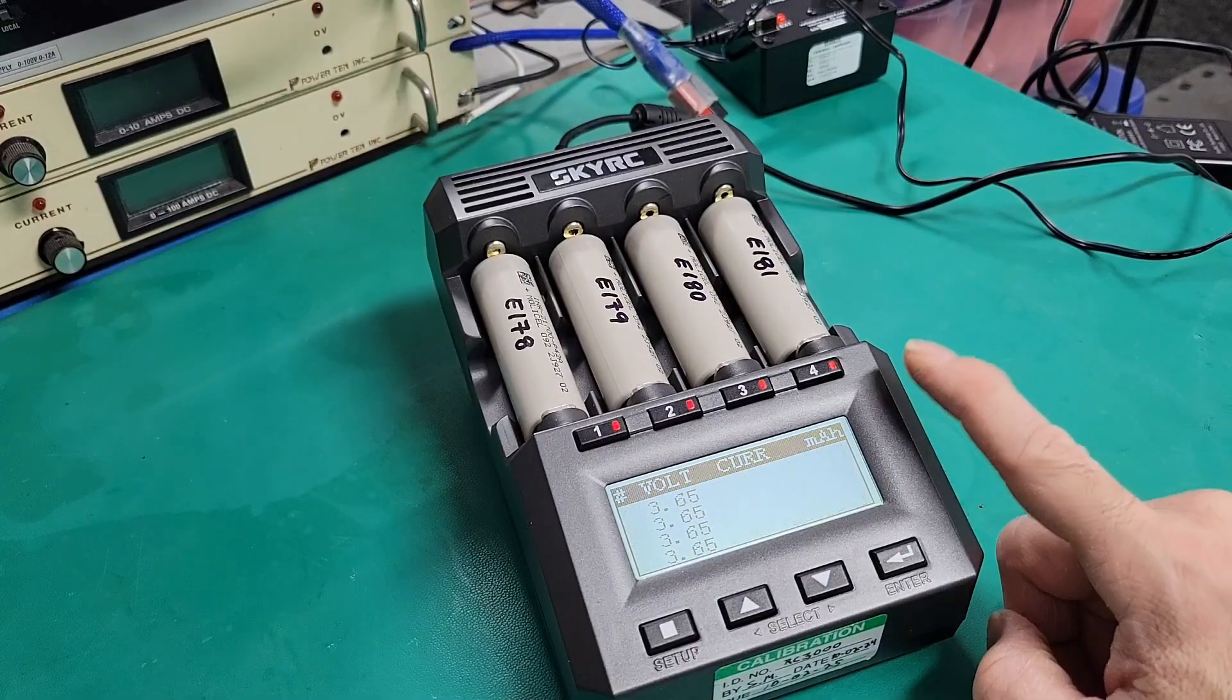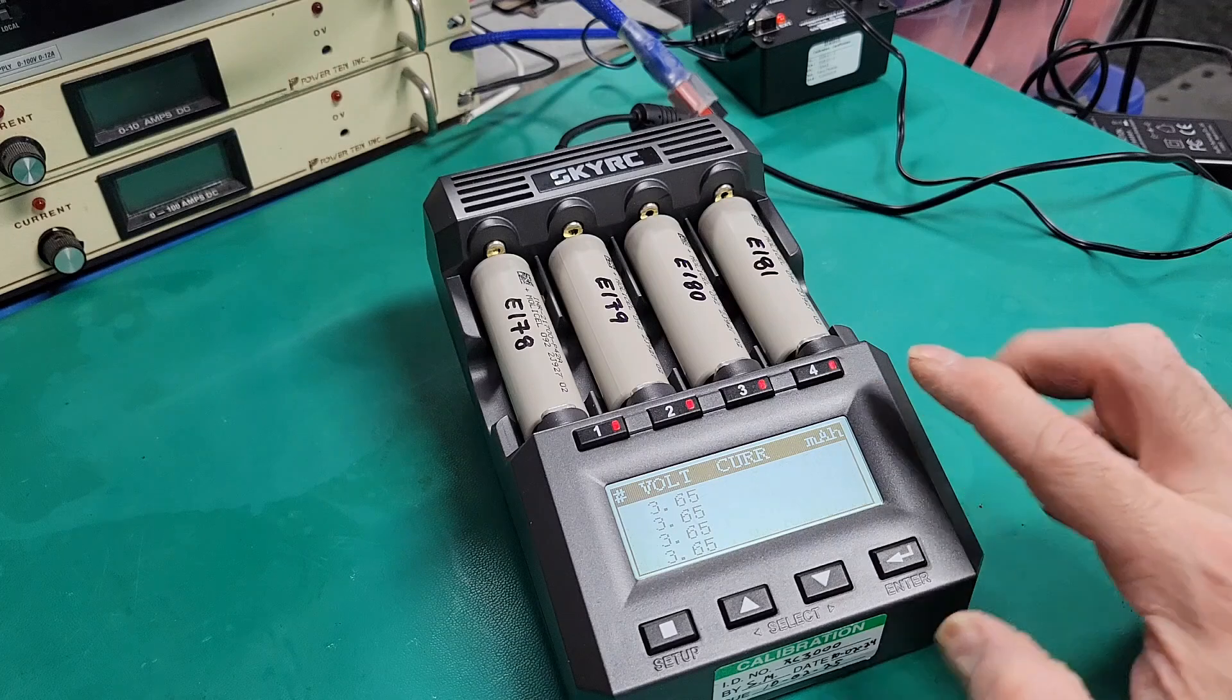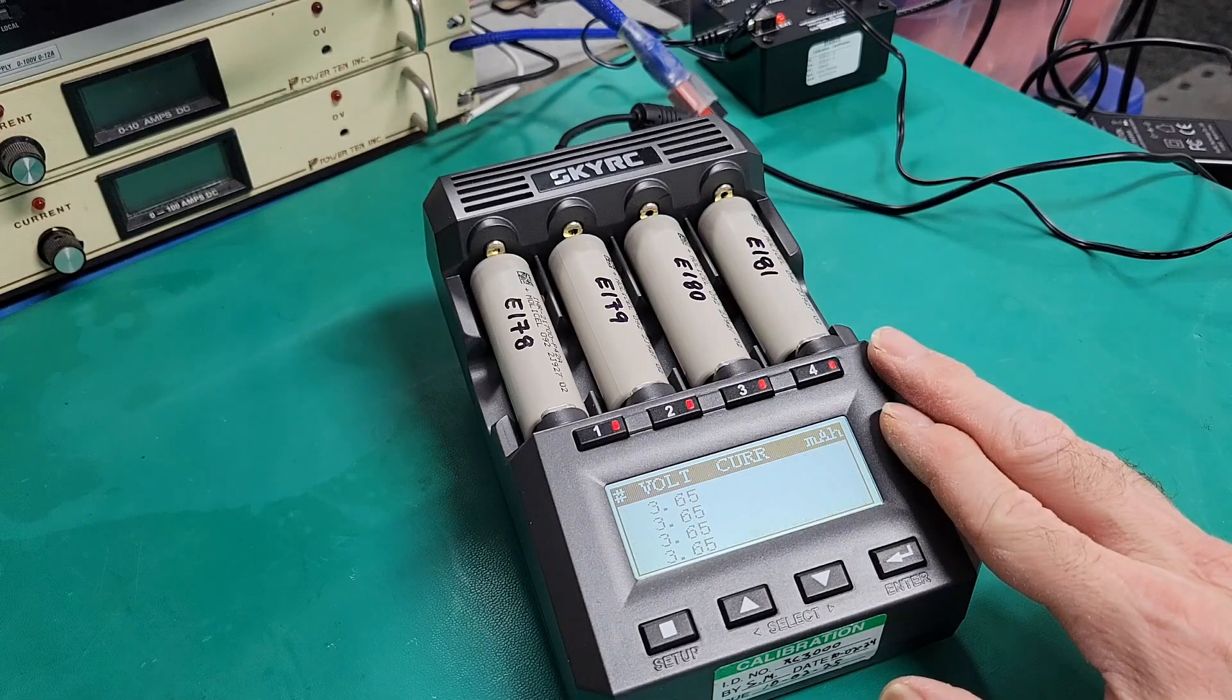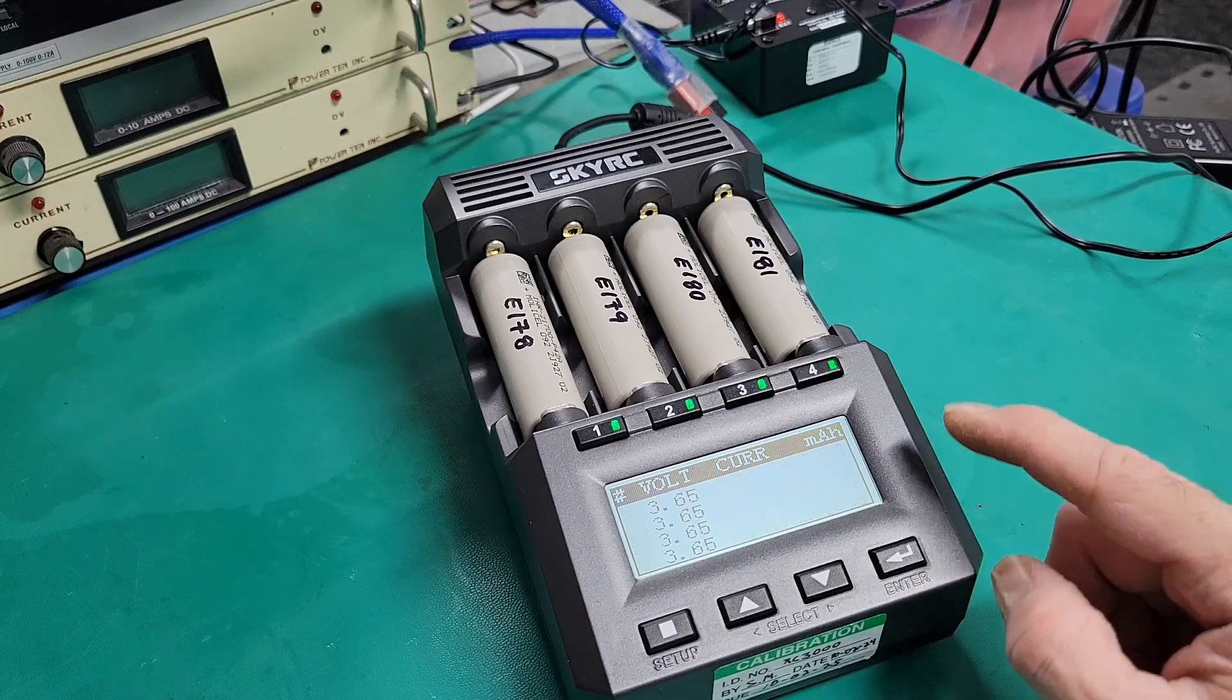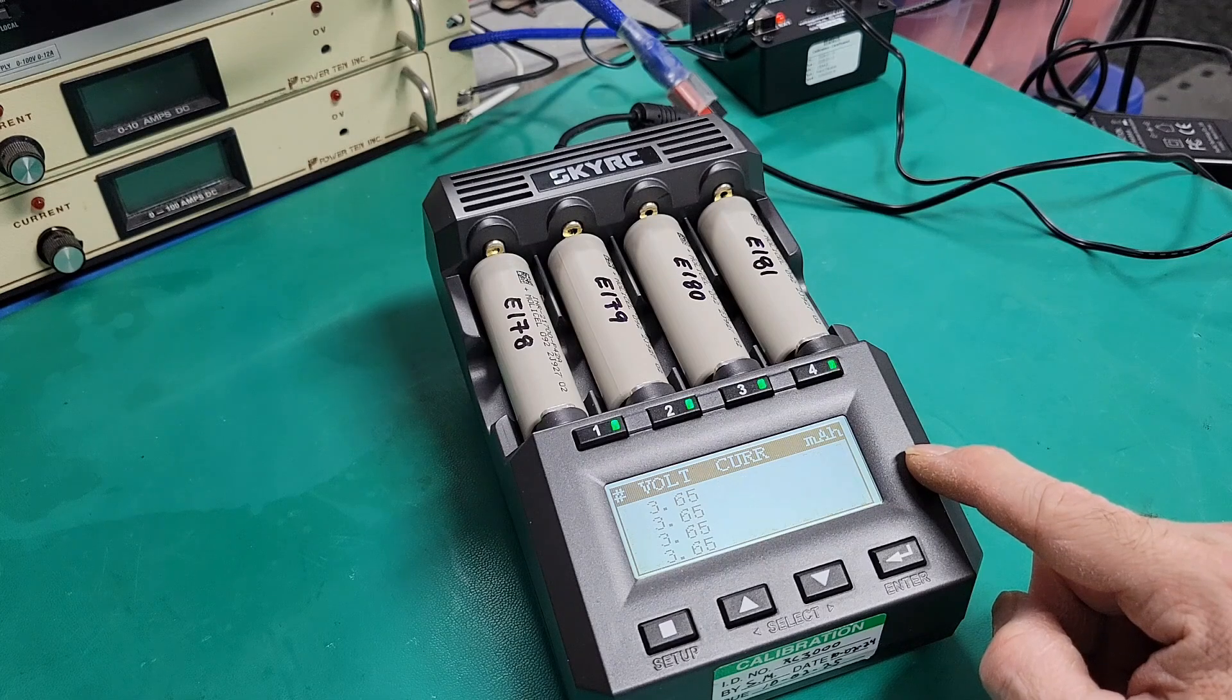And this is exactly the same with this precision single cell battery tester. What I like with this one, the SkyRC MC3000, is that you can calibrate both voltage and current at the millivolt and the milliamp range, which is very nice.